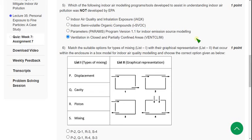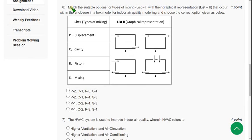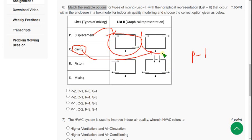Moving on to the sixth question: Match the suitable options with their box graphical representation. We know that displacement will be represented by this first box, so P goes to 1. And next, cavity. Cavity goes to the second box, this one. That means Q goes to 2.